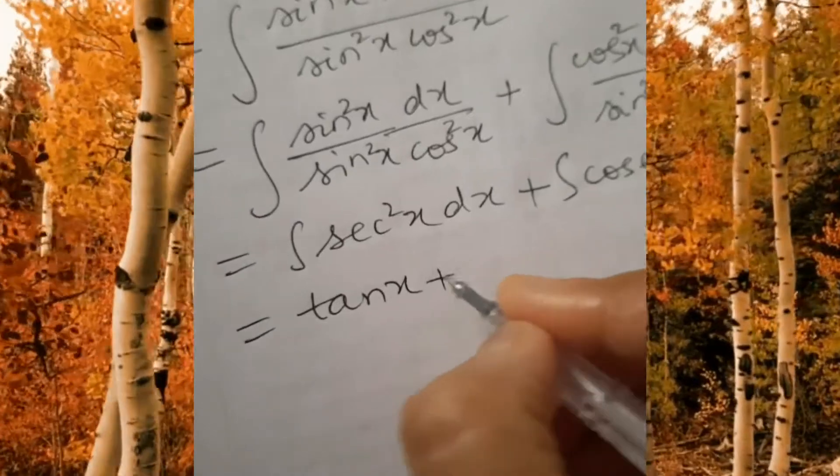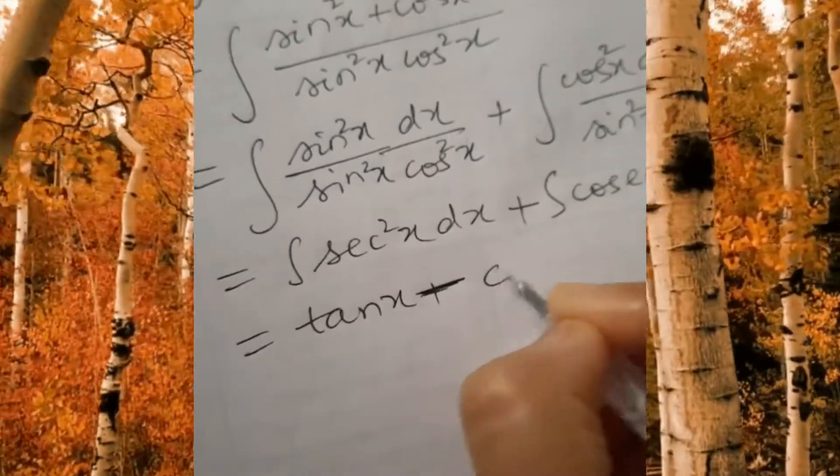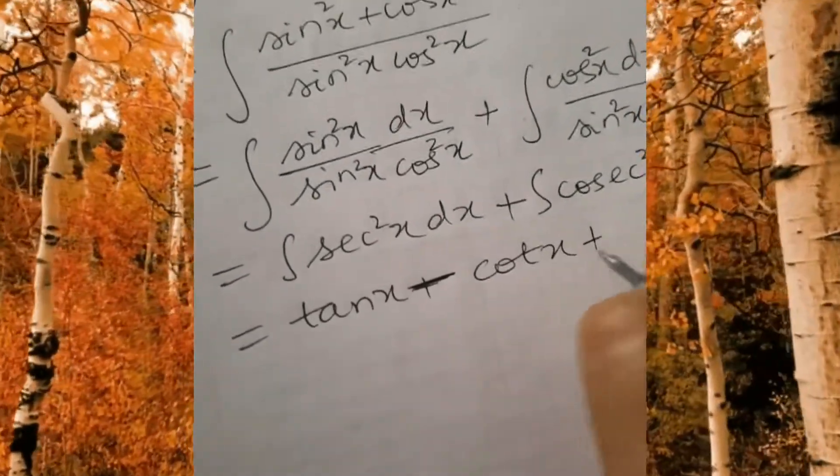Now taking the integral of the two we get tan x minus cot x plus c. Thank you.